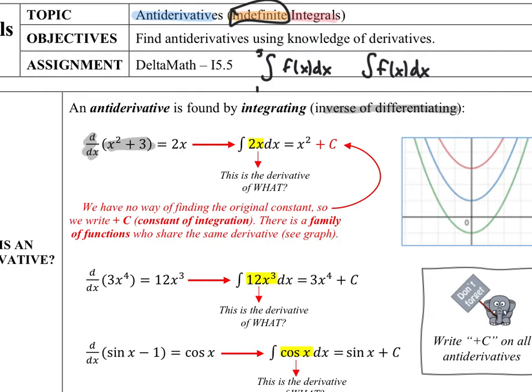When we do an integral, we're doing an antiderivative. I'm going to give you the derivative — that's what this 2x is — and you have to tell me what that original function is. The question that goes through your mind is: this is the derivative of what? If I'm looking at 2x and trying to work backwards, there is no way for me to recover the constant.